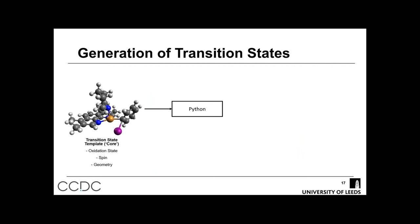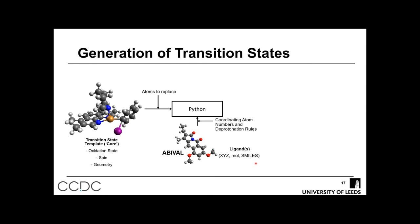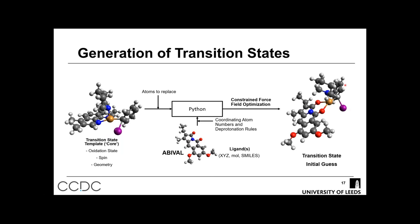Transition states are a bit more complicated. We start with a transition state core — a model of the transition state using a very simple ligand, also used as the reference for the CrossMiner search. We define the oxidation state, spin, and geometry, then perform ligand replacement by defining the atoms to replace — in this case, the two ligand nitrogen atoms. We add the ligand as XYZ, mol, or SMILES, define the coordinating atom numbers from the CrossMiner search and the deprotonation rules, feed this into the Python script, and after a constrained force field optimization that preserves the transition state mode, we get an initial guess for the transition state structure.